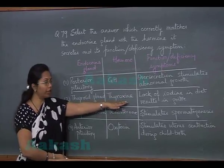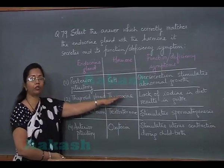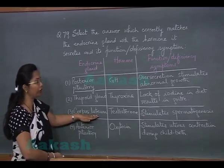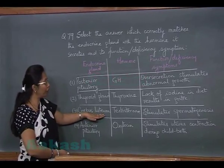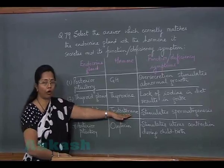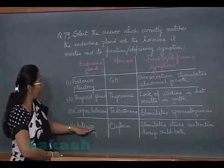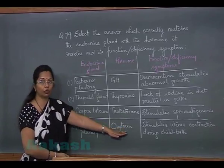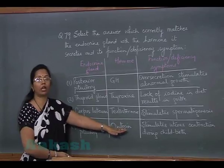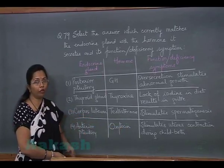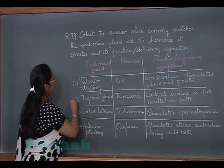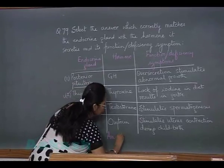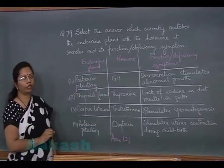Thyroxine is an iodinated hormone and requires iodine from the diet for its synthesis. The third choice, corpus luteum secreting testosterone, is incorrect. The fourth option, anterior pituitary secreting oxytocin, is also incorrect because oxytocin is secreted from the hypothalamus and released from the posterior pituitary. The only correct choice is the second one, so the answer is option 2.